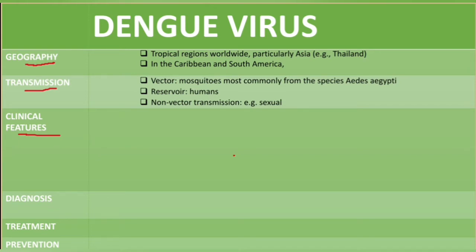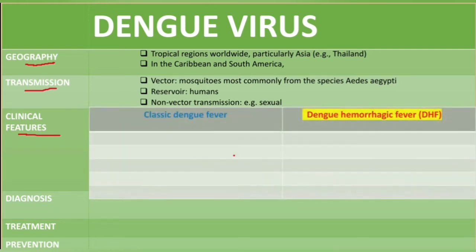The incubation period for dengue virus is usually 2 to 14 days. In children it is usually asymptomatic, but if symptoms are present they are grouped into two forms: classic dengue fever and dengue hemorrhagic fever.